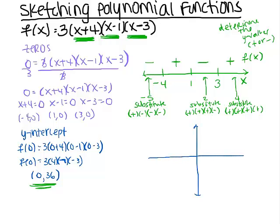I'm not going to label the y-axis because I don't really know the values of all these points — I'm just sketching to see positive or negative. I can label my x-axis because I know what the zeros are: negative 4, 1, and 3. I'm below the x-axis, then above, then below, then above. I have to hit each zero — below, then above, come back down to hit 1, then below, come back up to hit 3, then above. And there's the sketch of this cubic function: 3 times x plus 4 times x minus 1 times x minus 3.